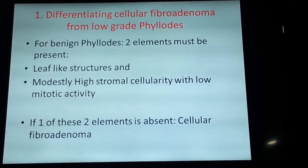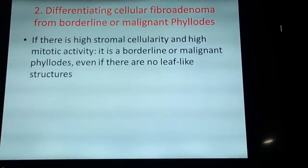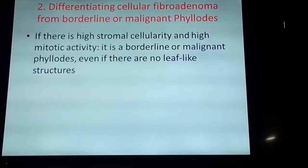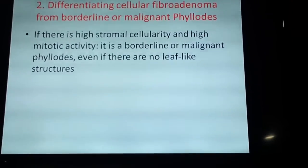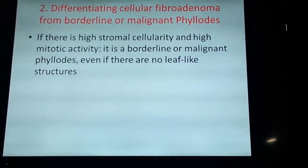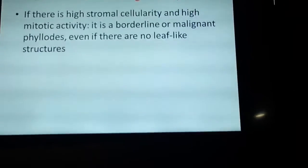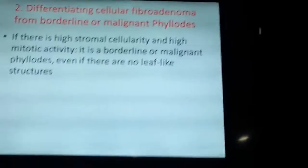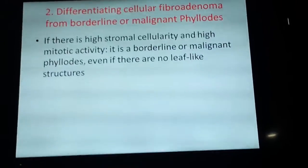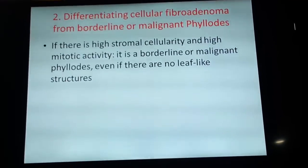I'll give you examples here and show you an example today. Then we have to differentiate between cellular fibromyalinoma and border blind or malignant filoides tumor. Sometimes you have the lesion with very high cellulite and high mycolic activity, but no leaf-like structures. In these cases, I would call it filoides tumor, and usually it's a so-called blind or malignant tumor.